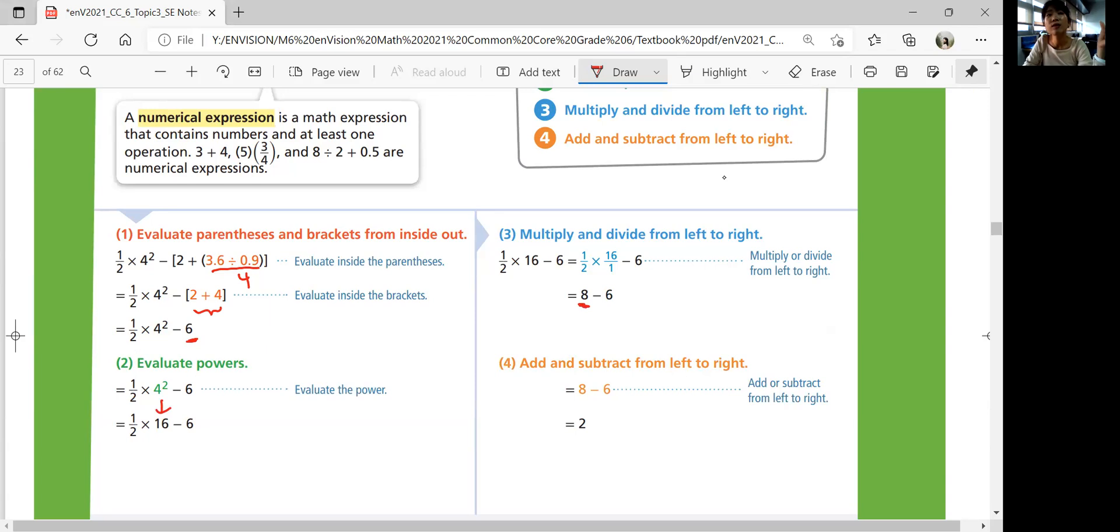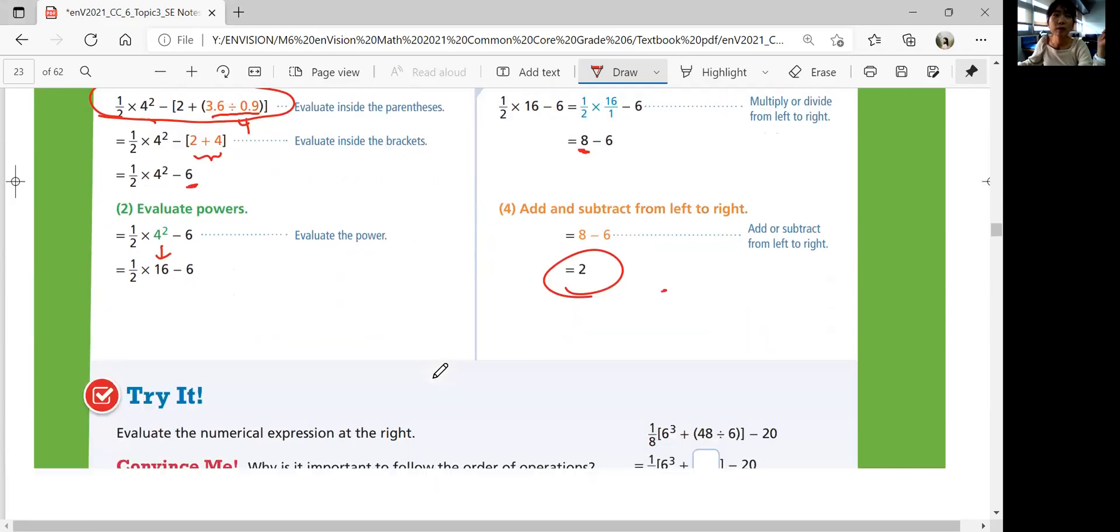And then you can subtract 8 and 6 together. And your final answer is just 2. So all this is equal to 2.